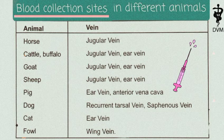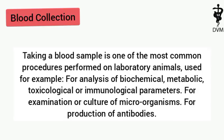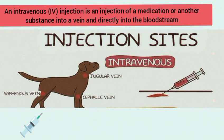Blood collection sites in different animals — you can see the table in the slide which shows the site of blood collection in different animals. Taking a blood sample is one of the most common procedures performed on laboratory animals, used for analysis of biochemical, metabolic, toxicological, or immunological parameters, for examination or culture of microorganisms, and for intravenous injection.